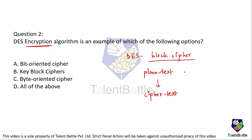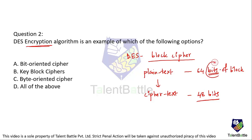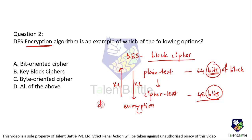The plaintext takes 64 bits per block, so you get an idea that bits are being considered. DES is a symmetric key algorithm, meaning the same key is used for both encryption and decryption. The entire process is bit-oriented — converting plaintext to ciphertext and back. That is why the answer for this question is option A: it is a bit-oriented cipher.